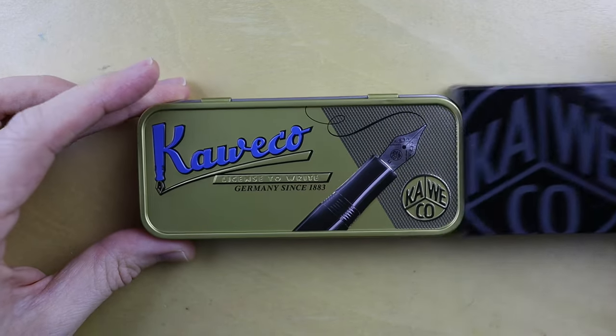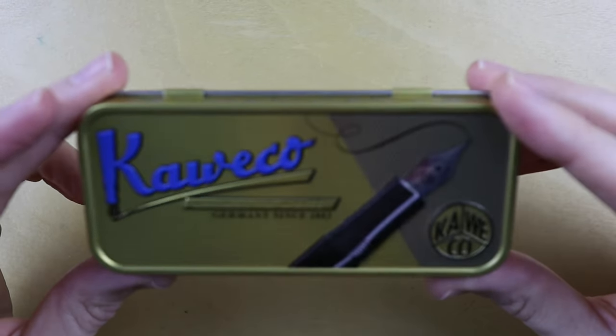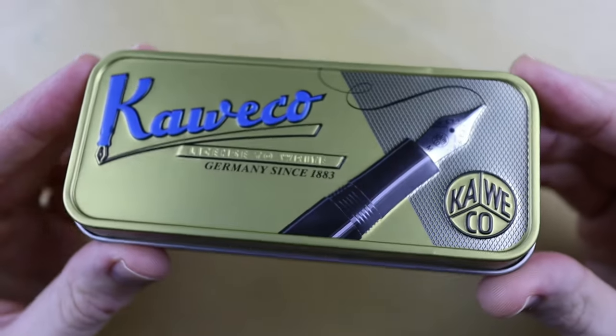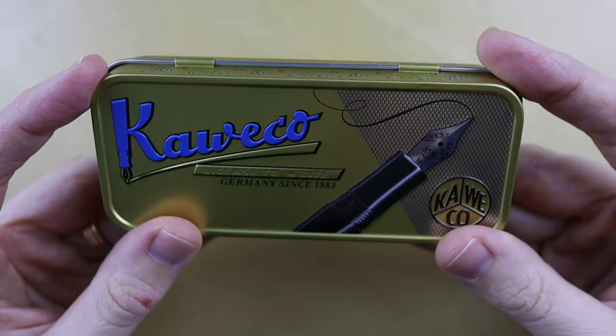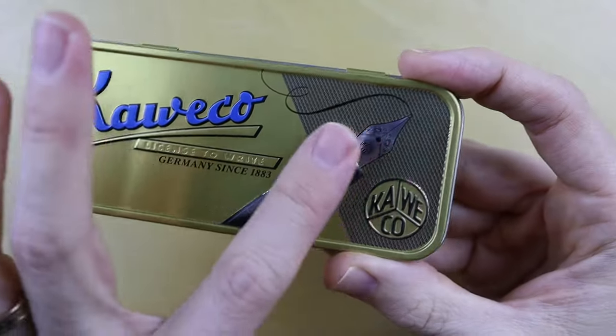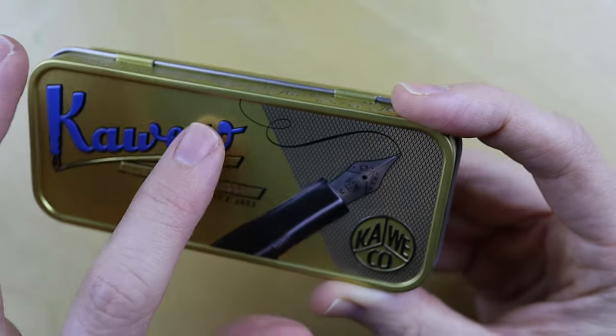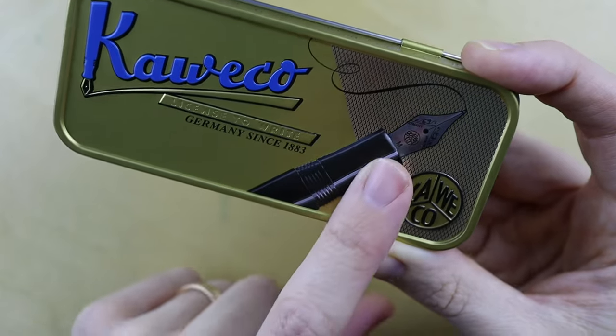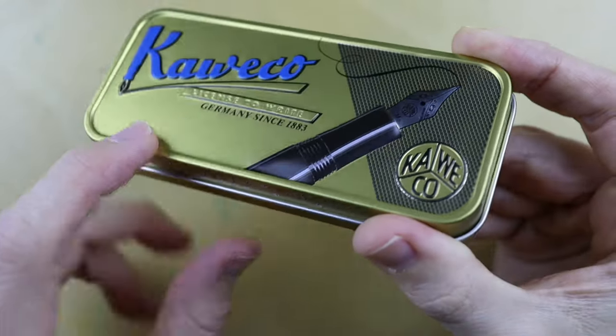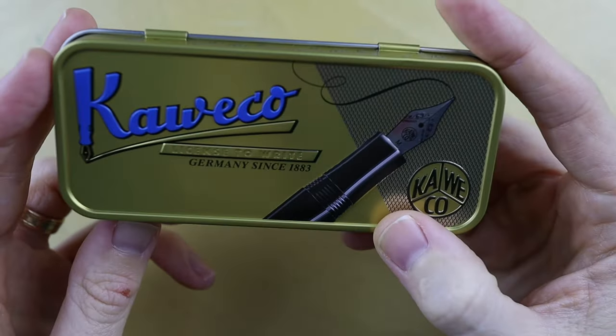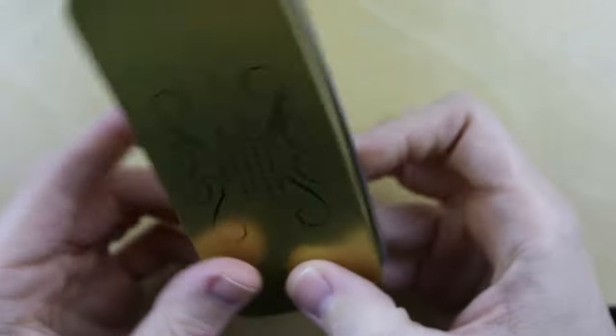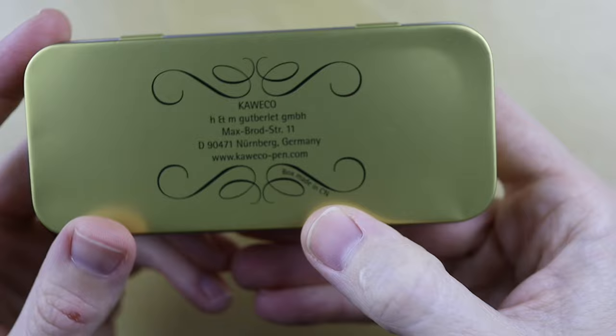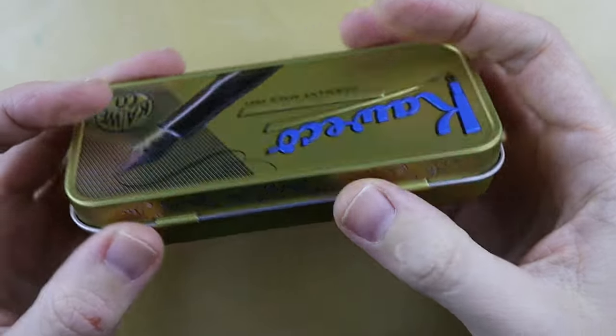Anyway, we're going to pull this out. And once again, I am very pleased with this tin. I'm very excited to finally own one of these. I've seen that their pens sometimes come in these cases. It's a beautiful embossing picture of the Sport, maybe. And it says Kaweco, license to write.